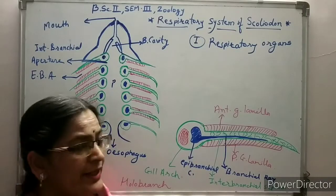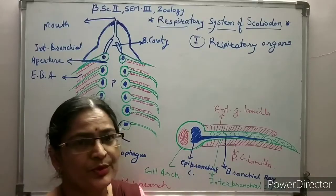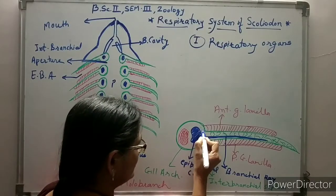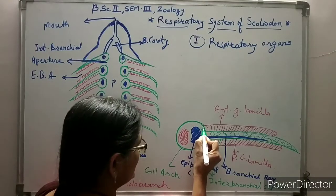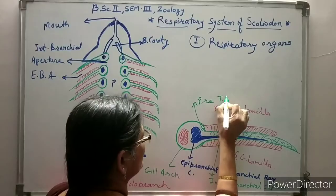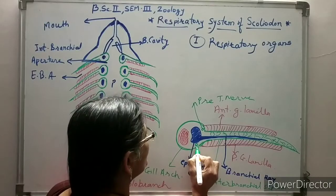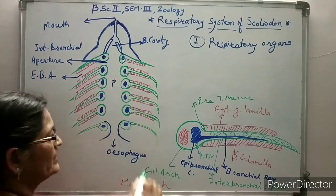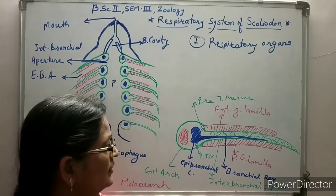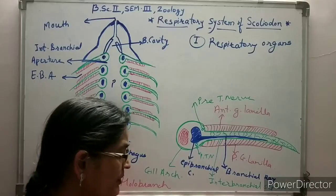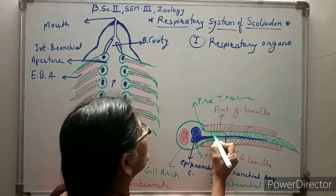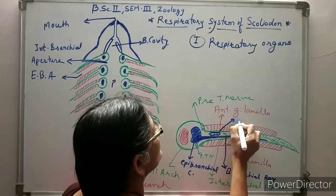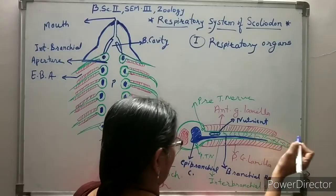These holobranch are provided with nerve fibers. We can observe the pre-trematic nerve and post-trematic nerve. This is the pre-trematic nerve and this one is the post-trematic nerve. This gill or holobranch is again supplied with a nutrient vessel — there is presence of a large vessel which is the nutrient vessel.